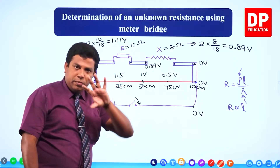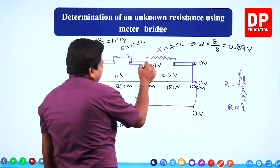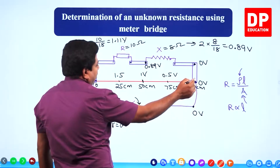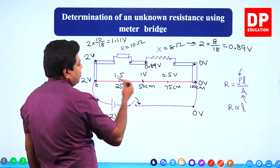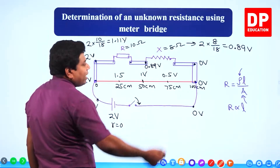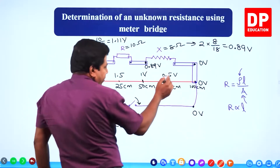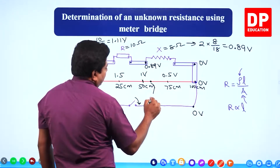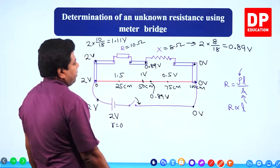Now look at the interesting part. This point is 0.89 volts. On the string, one side is 0 volts and the other side is 2 volts. So when you move along the string, at some point it also has to have 0.89 volts. Where would it be? Somewhere around 0.75 — somewhere here. This point on the string is going to be 0.89 volts.